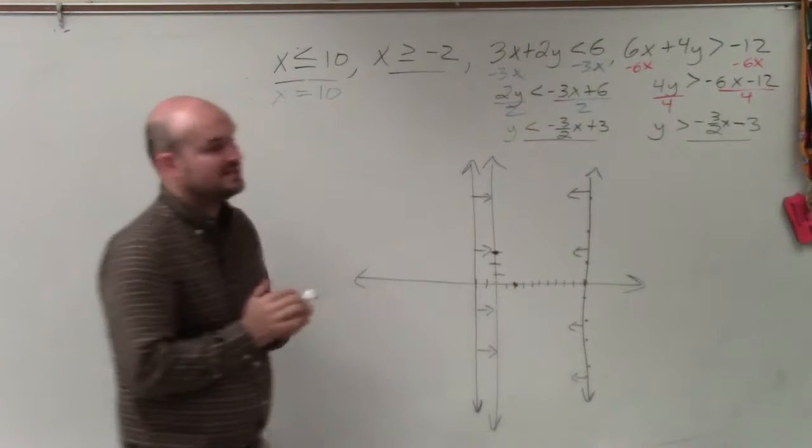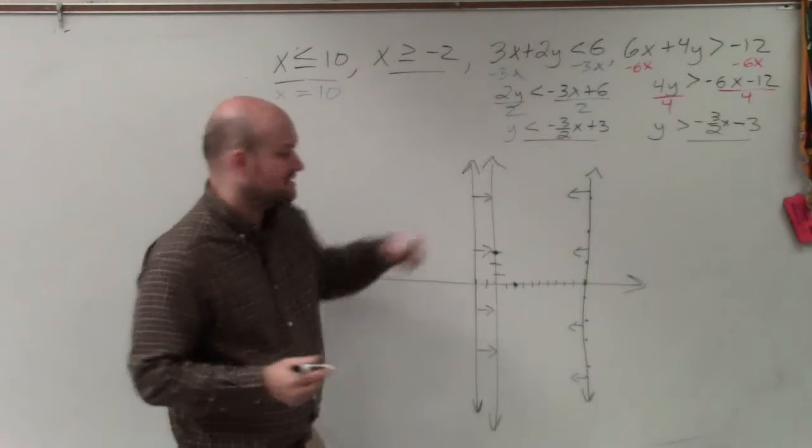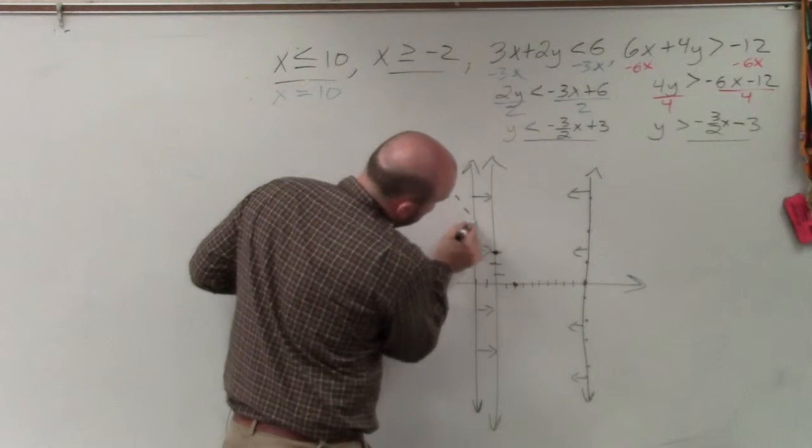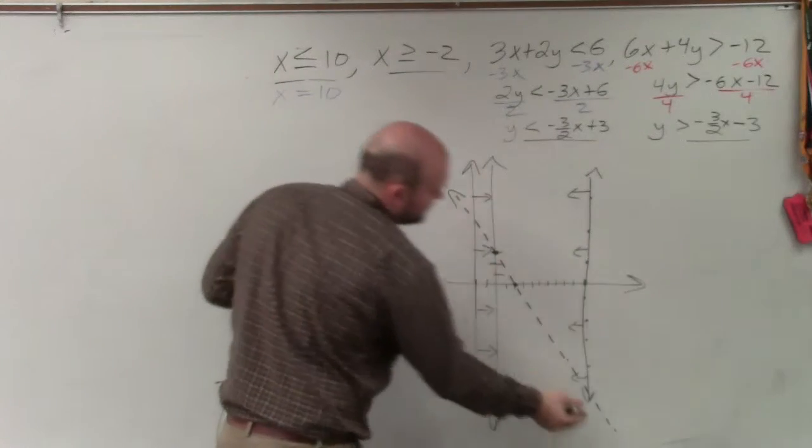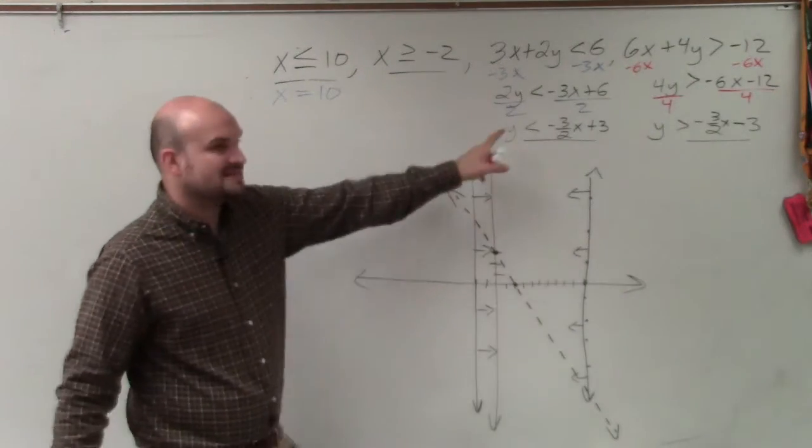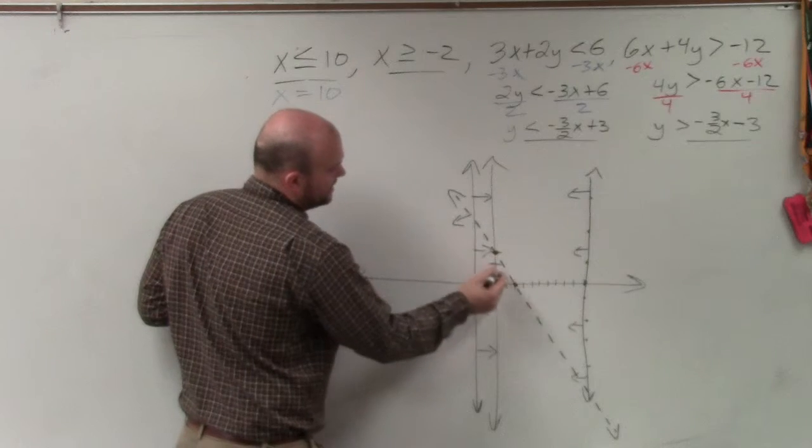The difference being, this one is a dashed line, right? It's less than. And since it's less than, I know I'm going to be shading down below.